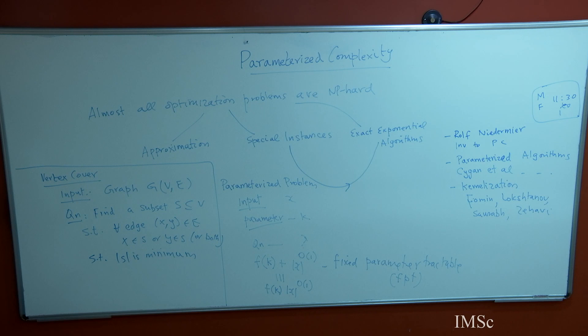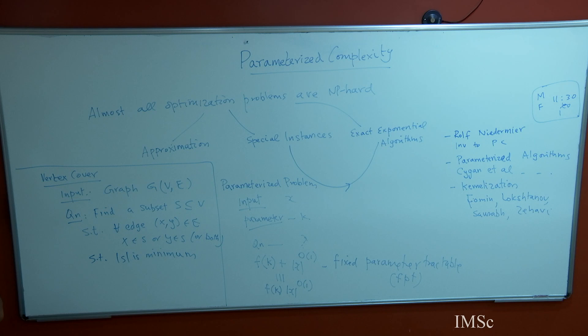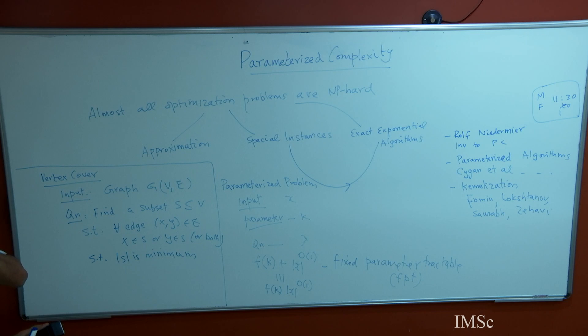There are classes of instances where vertex cover is solvable in polynomial time. Bipartite graphs is one such class — there is a nice algorithm which finds the maximum matching and from there obtains a minimum vertex cover. Trees or forests are another example; forests are also bipartite graphs, so as a corollary you also have a polynomial-time algorithm for trees. For bipartite graphs you find the maximum matching and do a bit of work to get the minimum vertex cover. On trees there is a very simple algorithm, which we will use for kernelization later.